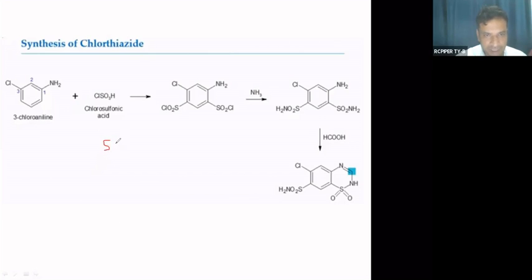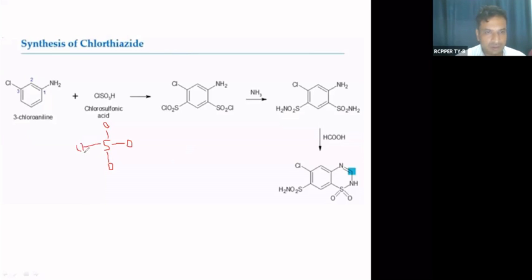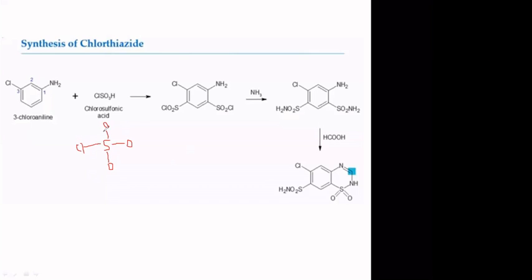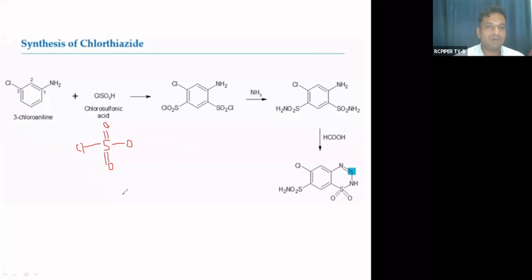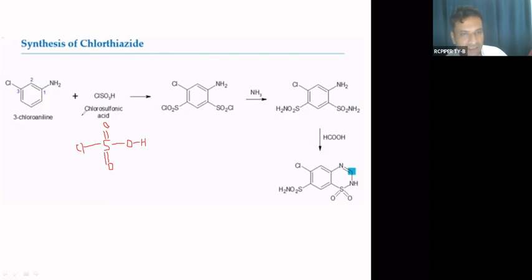In the Lewis structure of chlorosulfonic acid, sulfur is bonded to three oxygens — two with double bonds (like SO₃) — and one chlorine. One of the oxygens is attached to H, making it an acid. This is the Lewis structure of chlorosulfonic acid.